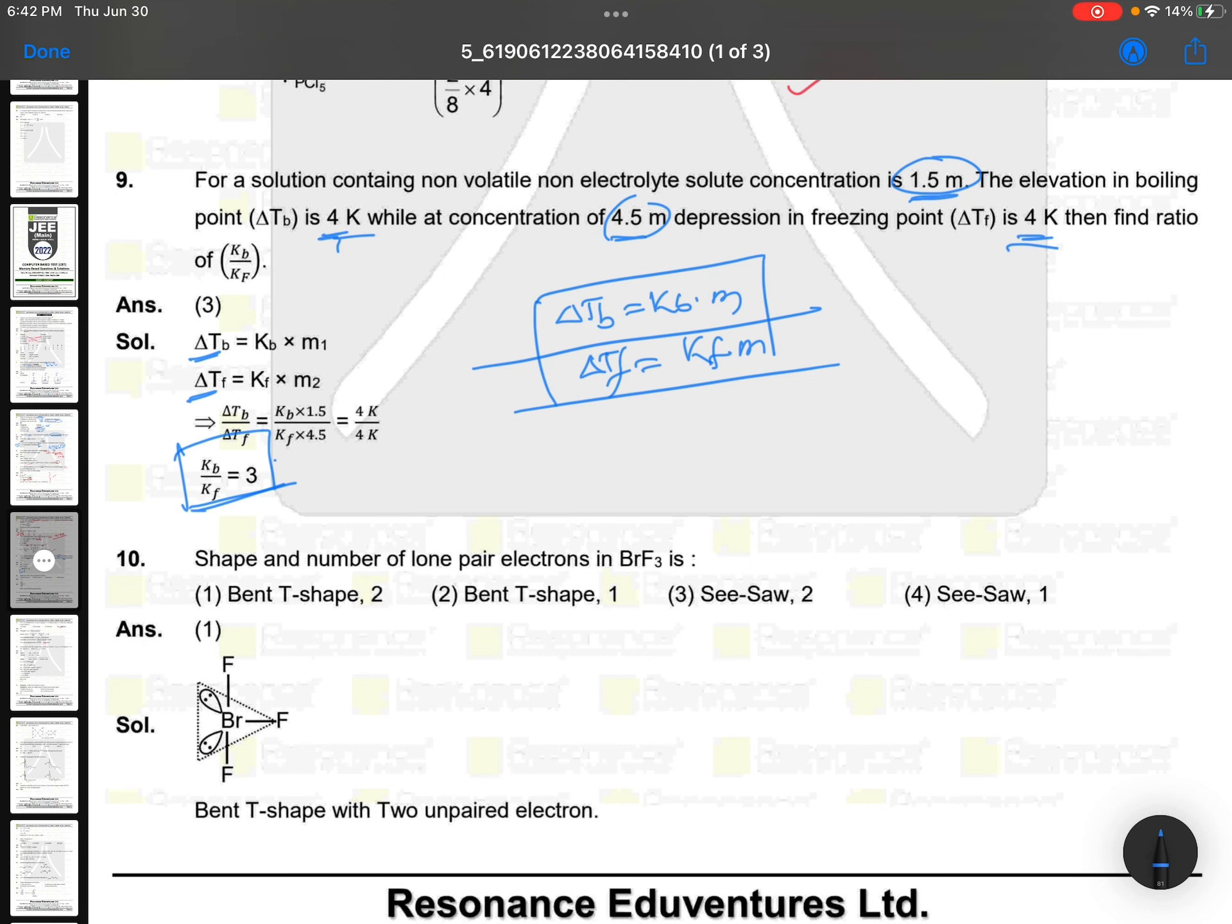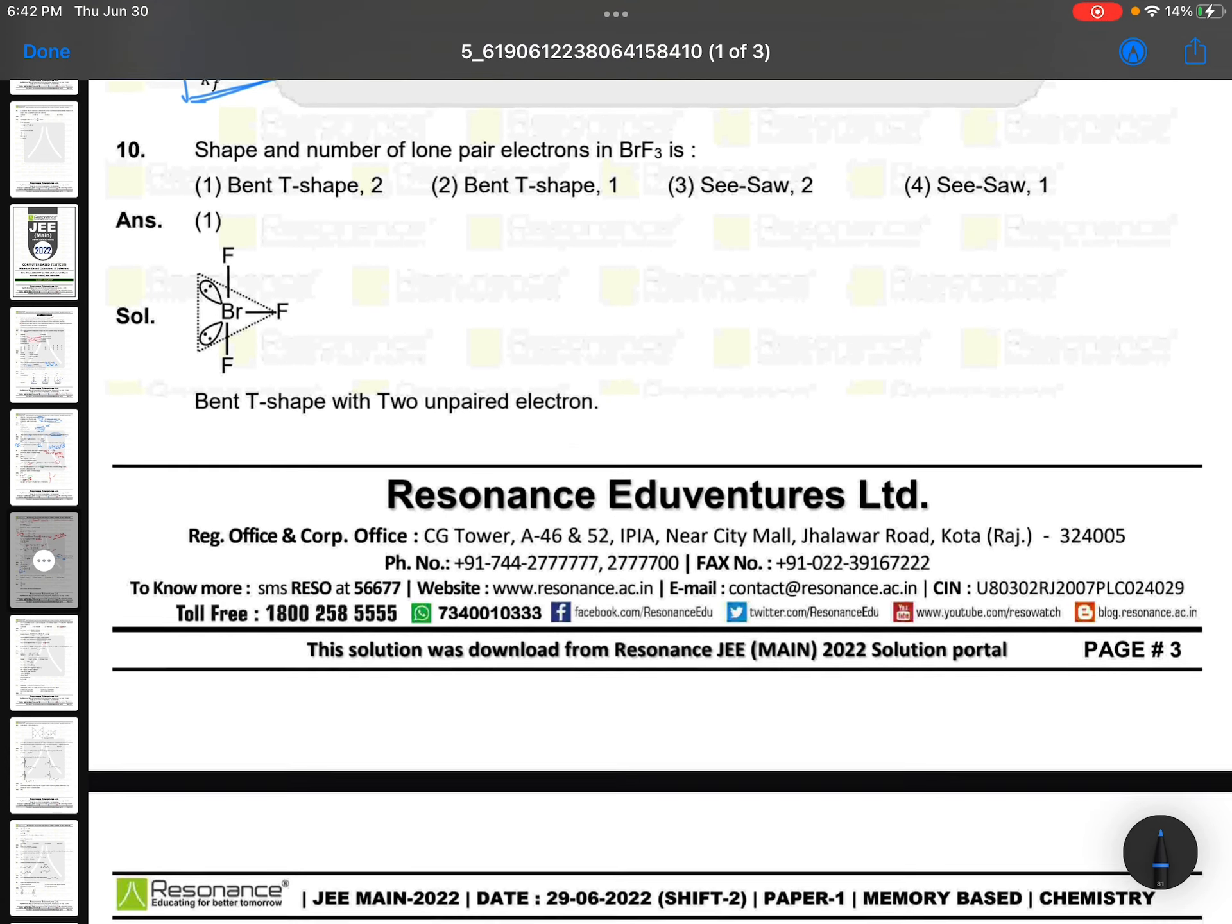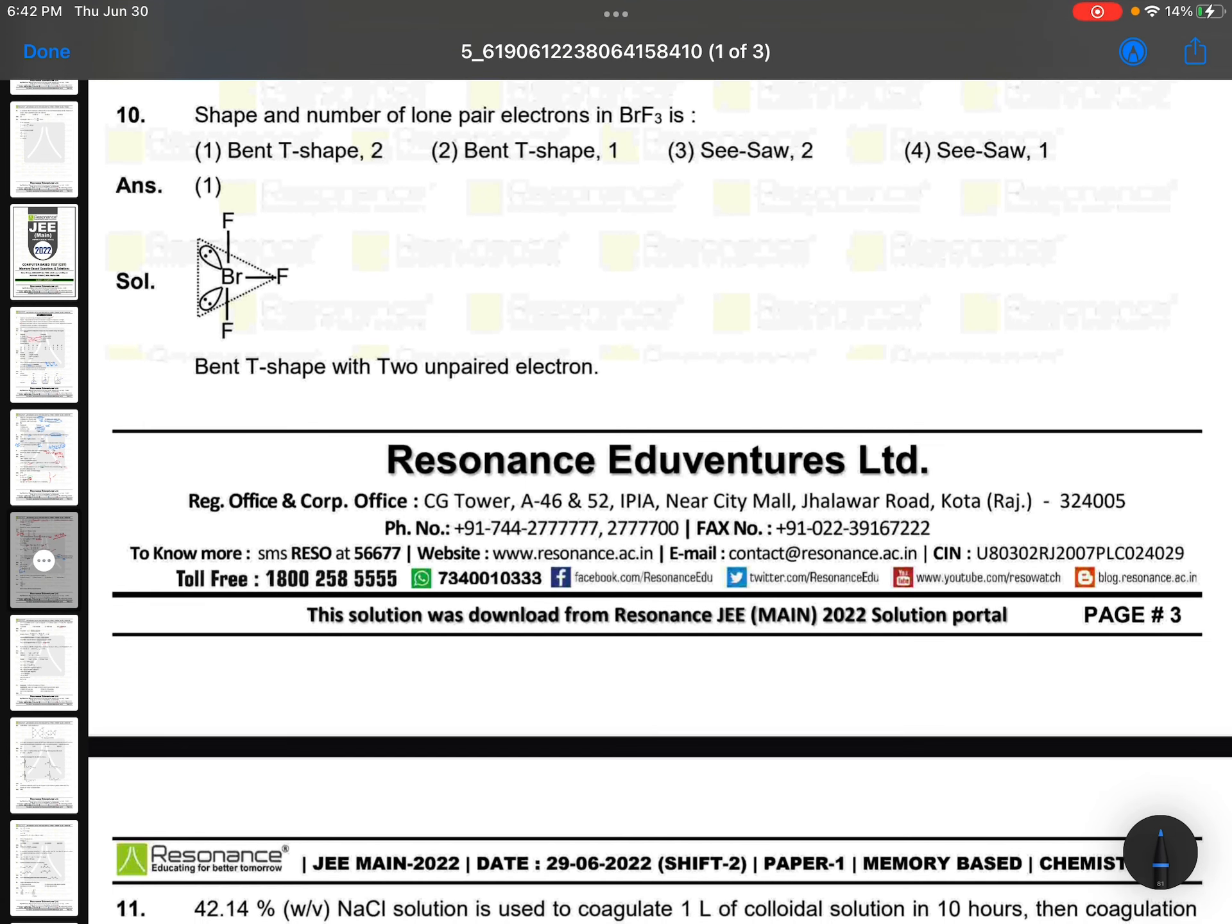Shape and number of lone pairs in BrF3: BrF3 will have two lone pairs and three bonds, so this is T-shaped. Shape and number of lone pairs: two lone pairs will be there, T-shape.